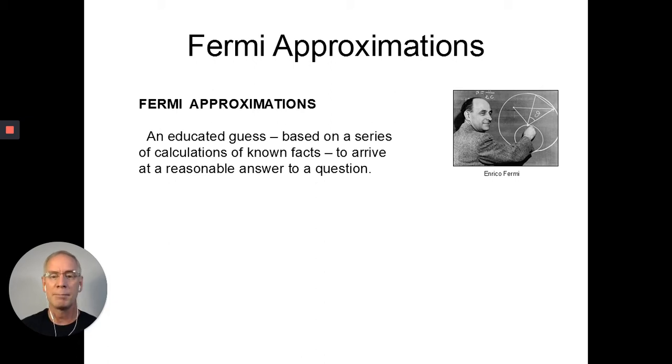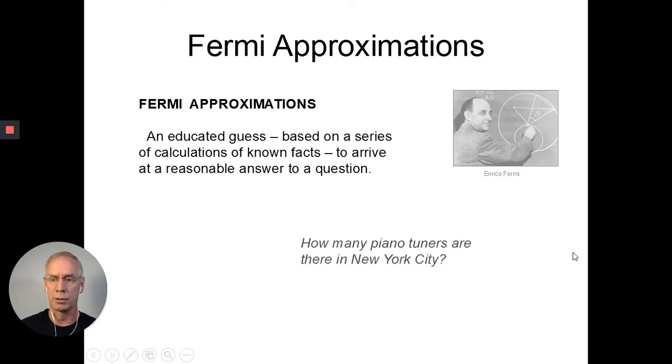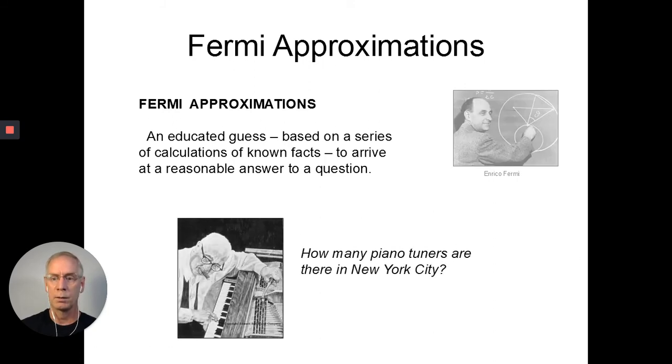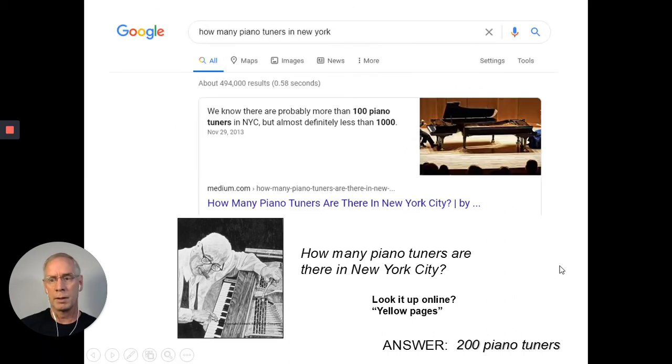Let me give you a simple example of a Fermi approximation. I could ask the question, how many piano tuners are there in New York City? There's no way for you to know that answer. Sometimes people say, I'll give you an answer, there's 200 piano tuners. Am I right? Well, I think I'm pretty close. Did I look it up online? No. You're not going to find everyone online because every piano tuner may not be listed. You can't look it up in the yellow pages, the old phone book, because they might not pay for the ad.